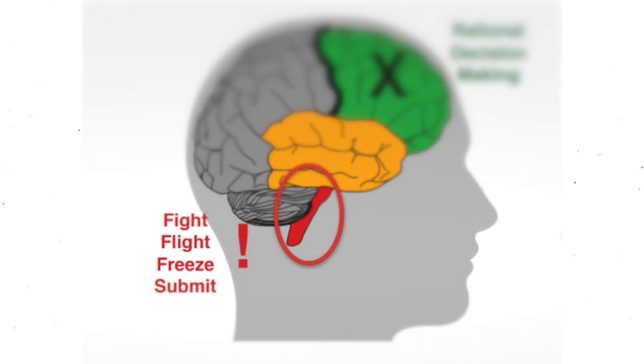The red area of the brain is known as the survival brain or the brainstem. This is the part of the brain that controls the automatic bodily functions such as breathing, body temperature, heart rate, sleep, among other functions.